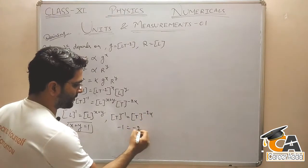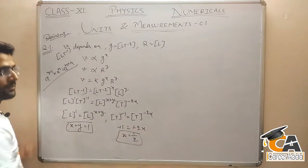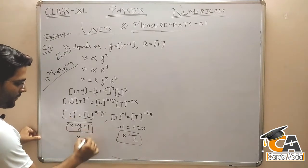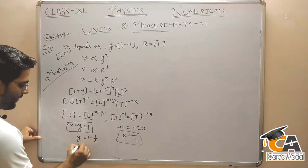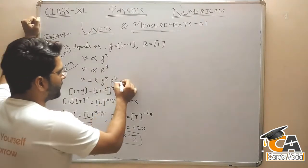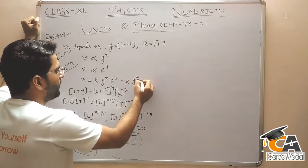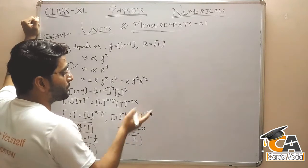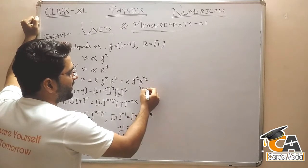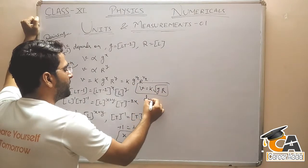Minus 1 is equal to minus 2X, minus-minus will cancel out, so X की value आजाएगी 1 by 2. क्योंकि 2 transpose करेंगे तो divided हो जाएगा। तो यहाँ पे Y is equal to 1 by 2 मिल जाएगा। X और Y दोनों की value 1 by 2 आजाएगी। G to the power 1 by 2 और R to the power 1 by 2।